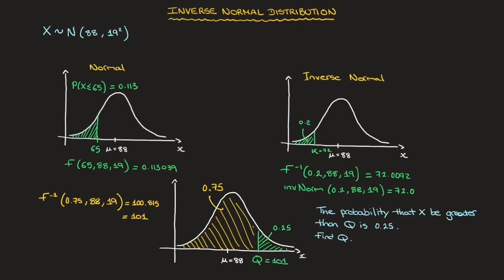Do make a note of this second example — in particular, that we have to use the left-hand side of the graph. To stress that further: had we used the inverse normal function with an input value of 0.25 directly, our calculators would consider the lower left portion of the curve whose area is 0.25. The value of X our calculator would give is 75, which is very different from the correct answer of 101.